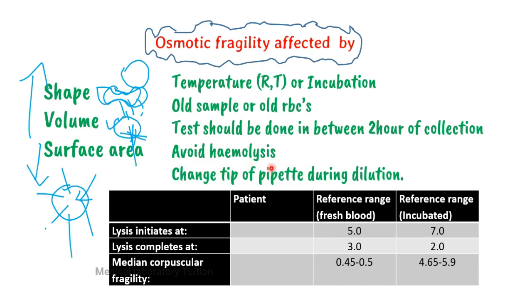Avoiding hemolysis is very important — avoid using needles that are very pointed and do not vigorously mix blood with the anticoagulant, as this causes hemolysis which affects test results because the hemoglobin released absorbs light and gives false readings. During dilution from 0.9 to 0.8 to 0.75 and so on, change the pipette tip each time to avoid dilution errors. The topic is now complete. One question for you: if you listened carefully, in which condition or entity would we take blood for the osmotic fragility test?